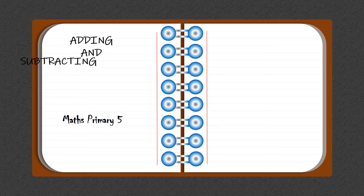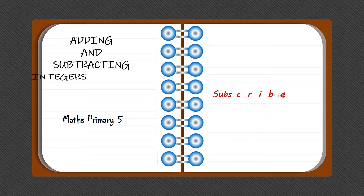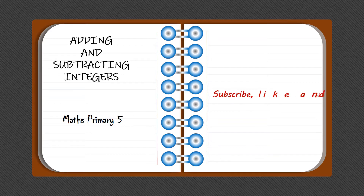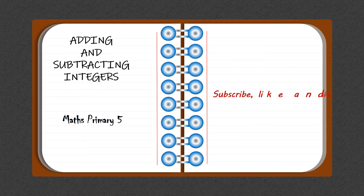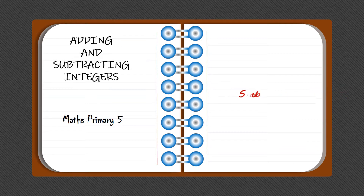Welcome once again. Today we revise Mathematics Primary 5, and we focus on adding and subtracting integers. From P4, you have learned what an integer is — negative and positive numbers. You have also learned how to put them on a number line, and how to compare integers when given positive and negative numbers, or positive and positive numbers.